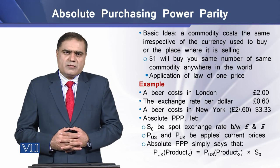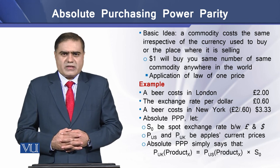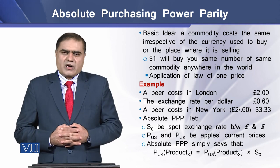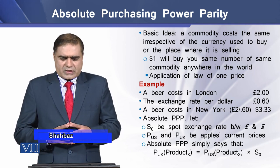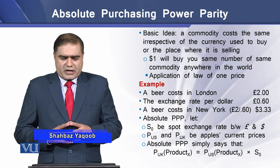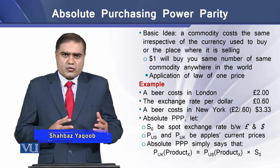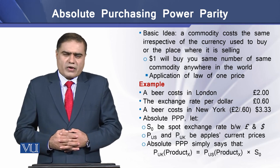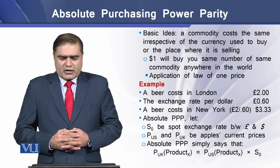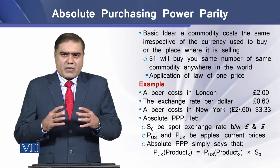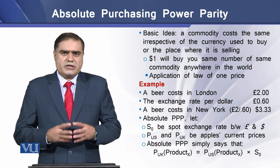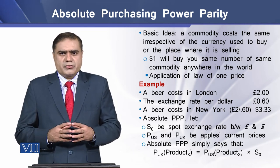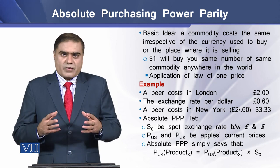The basic idea behind absolute purchasing power parity says that a commodity does cost the same irrespective of the currency used to buy it and the place where it is sold. For example, $1 will help you buy the same number of a commodity anywhere in the world, and this is due to the application of the law of one price.